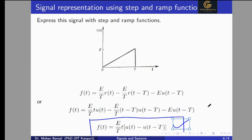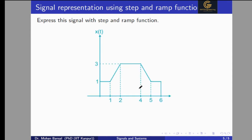Now we solve a problem with a combination of step and ramp signals. At t=0, one step is taken by the signal with amplitude 1, so we write u(t). The slope values are: 0 before t=1, then slope = (3−1)/(2−1) = 2 between t=1 and t=2, slope = 0 between t=2 and t=4, then slope = (1−3)/(5−4) = −2 between t=4 and t=5, and 0 after t=5.